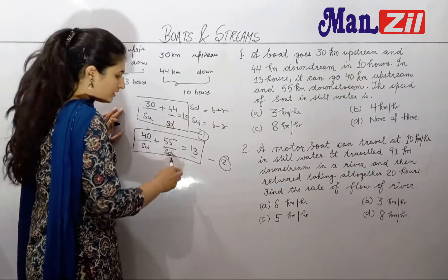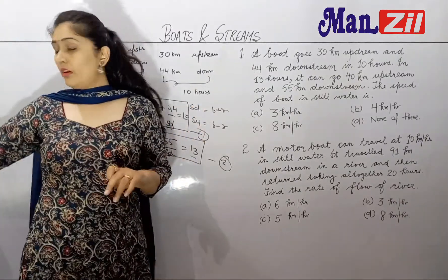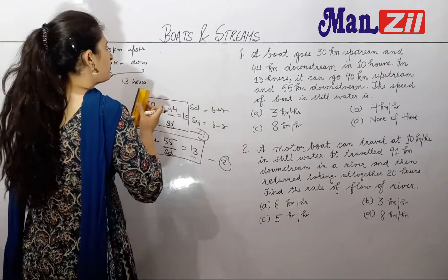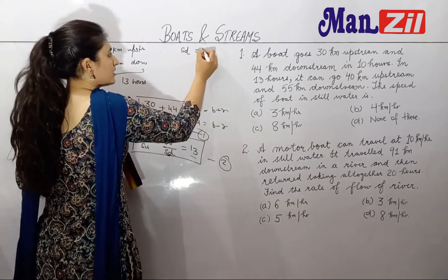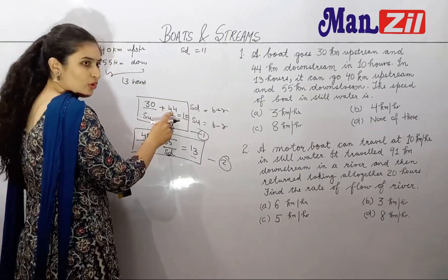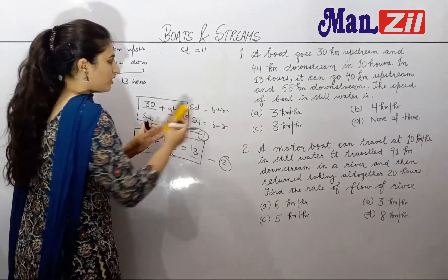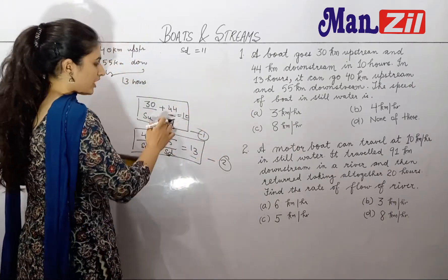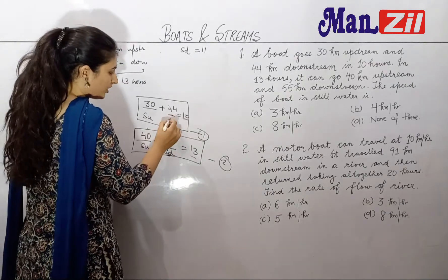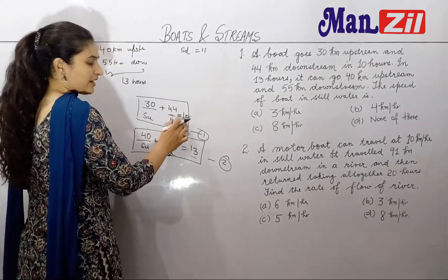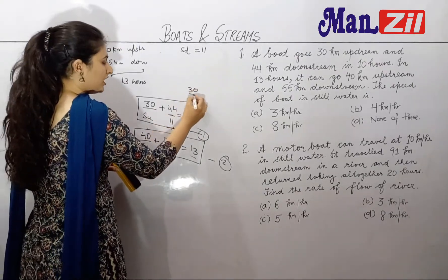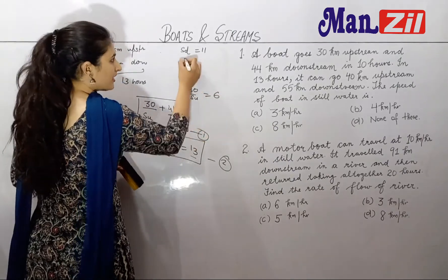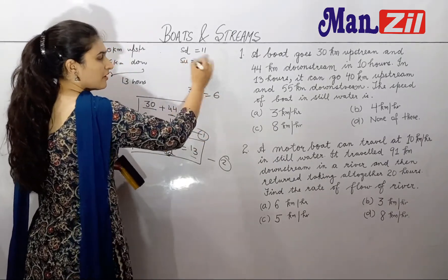We consider speed downstream to be 11. If we consider 11 as the speed downstream, then the remaining time for upstream in the first equation would be: 10 minus 4 equals 6. So 30 upon speed of upstream is equal to 6.